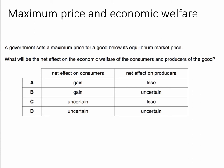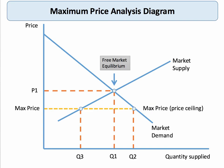What's the net effect on consumers and the net effect on producers? The answer is C. The net effect on consumers is actually uncertain. The net effect on producers we can be pretty sure is that they will lose. Let's take a look at the reasoning.